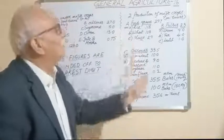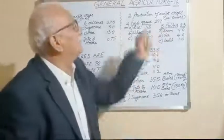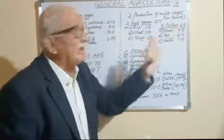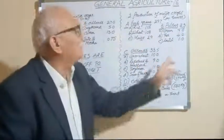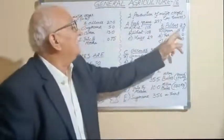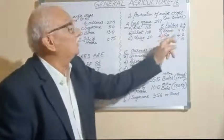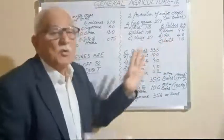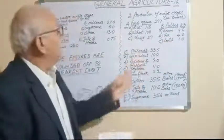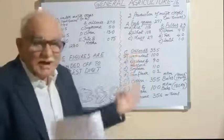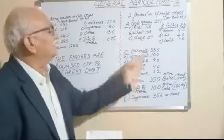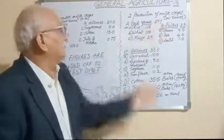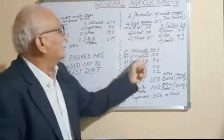For pulses, total production is 23 million tons. Among major pulses, gram accounts for 9 million tons. As far as oilseeds are concerned, total production is 33.5 million tons. Groundnut: 10 million tons.